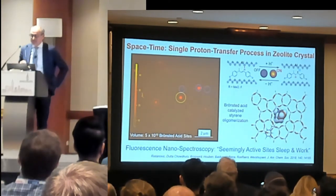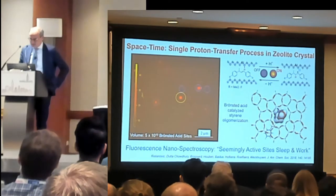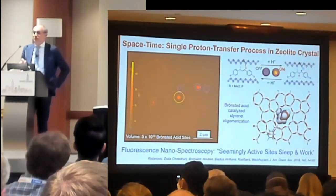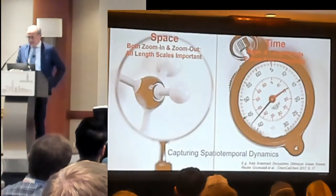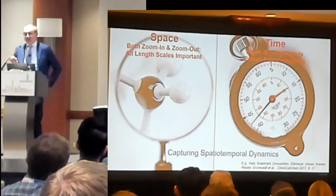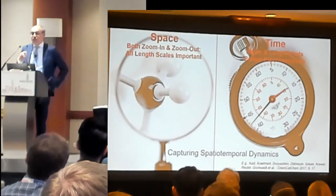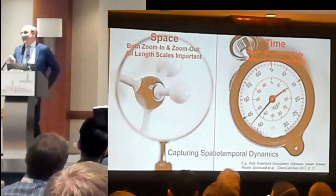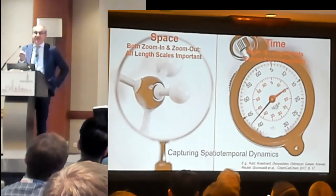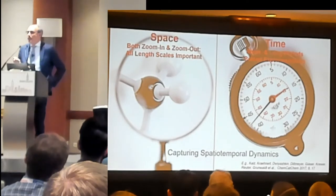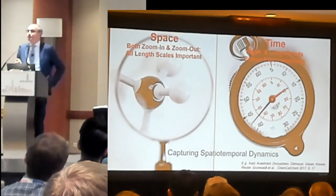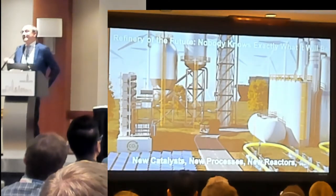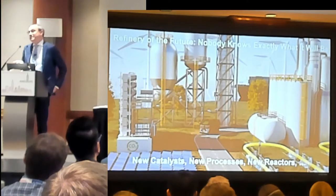That is something we also find in the predominant literature on enzymes. The other thing I want to show is that you need time resolution and space resolution. Space means you have to zoom in and zoom out — all length scales are in focus. Time also means you want to measure fast but also slow, and you want to do it pulsed to actually perturb the system.